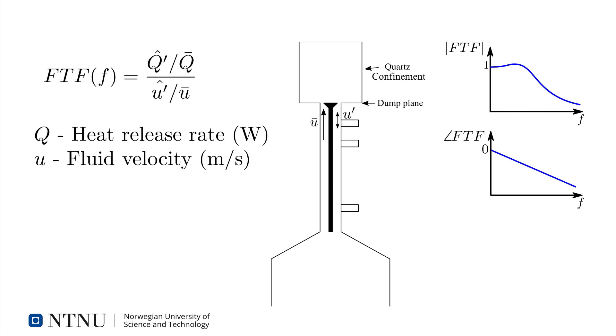The magnitude of the FTF is called the gain. A typical gain and phase plot is shown on the screen. A gain of one implies that if the velocity was fluctuating at five percent of the mean, the heat release rate would also fluctuate at five percent of the mean.